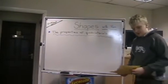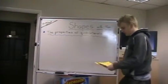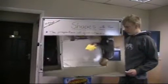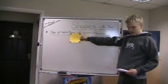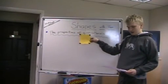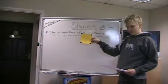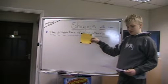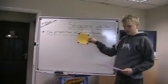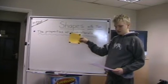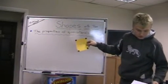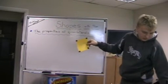Quadrilaterals always have four sides. A square has got four sides of equal length and four right angles — 90 degrees. All the angles in a quadrilateral add up to 360.